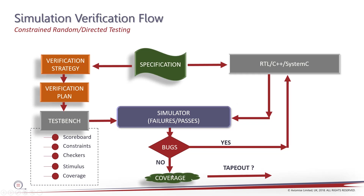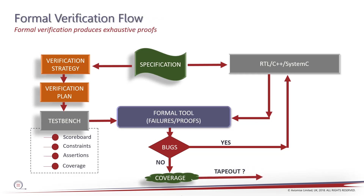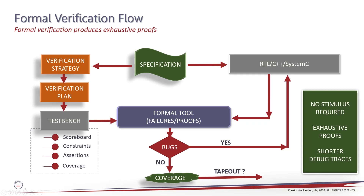Finally, you run your coverage analysis and decide whether you want to tape out. Interestingly, this is not very different from how formal verification is run in practice, except there is no effort needed on stimulus generation. The same specification is used to build up a verification strategy and verification plan. The test bench is then fed into a formal tool, along with your design implementation models at RTL — C++, SystemC, Verilog, VHDL. The tool is able to give you not only failures hinting at bugs, but also an exhaustive proof of correctness — a very important artifact of formal. You then run your coverage analysis to figure out what is reachable, what is not, and how complete you are in your verification. The key differences: no stimulus required, you get exhaustive proofs, and debug timescales are much shorter than simulation.